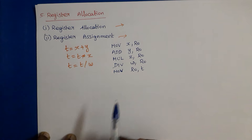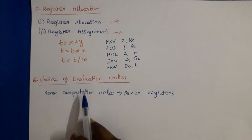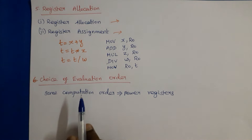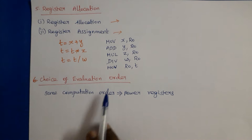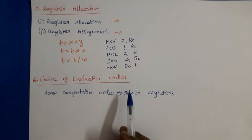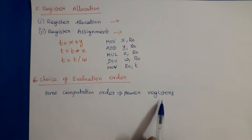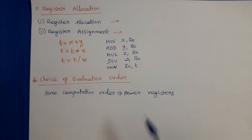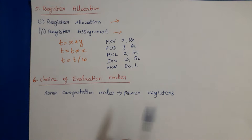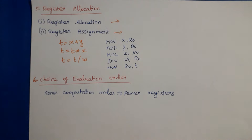The sixth issue is choice of evaluation order. The choice of evaluation order also affects the efficiency of the target code, because some computation orders will require fewer registers to perform the computation while other orders may need more registers. We need to choose the proper evaluation order to reduce the number of registers used. These are all six points we need to keep in mind while designing the code generation phase.